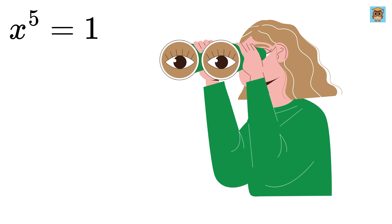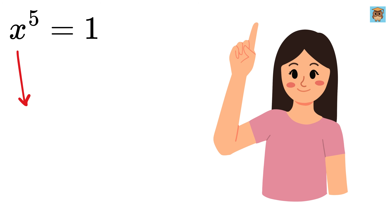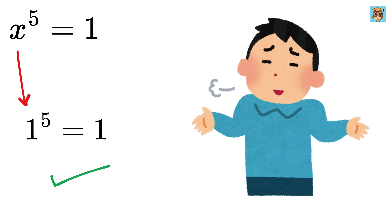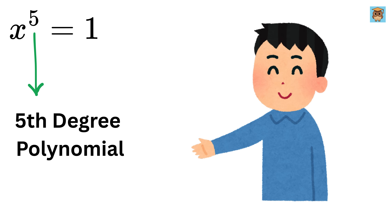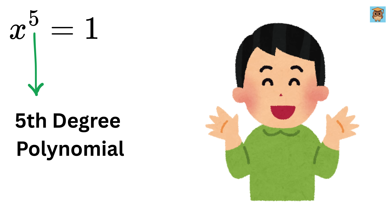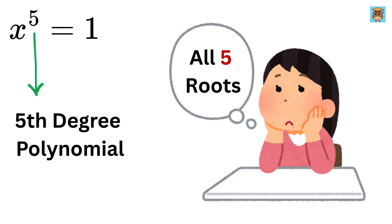Just after looking at this equation, you might think that simply x equals 1 and that's it. While x equals 1 is indeed a solution, this equation is actually a fifth degree polynomial, which means it has five roots in total — not just one. So can you find all five roots of x?